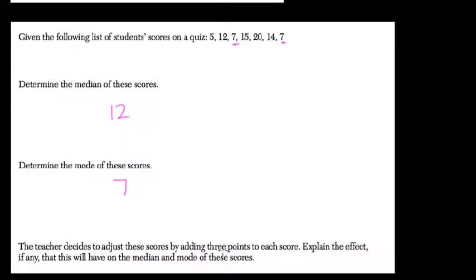The teacher decides to adjust these scores by adding 3 points to each score. Explain the effect, if any, this will have on the median and mode.